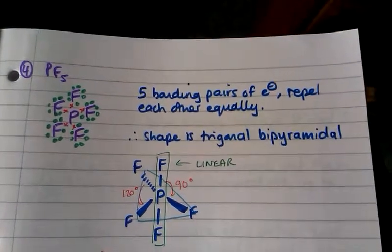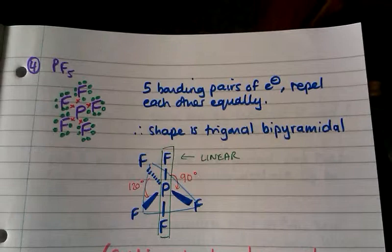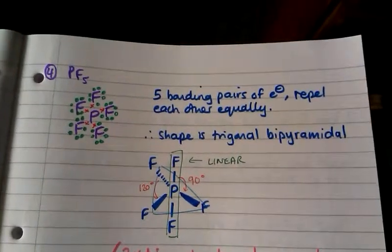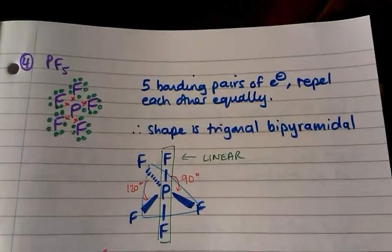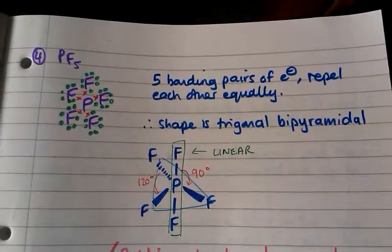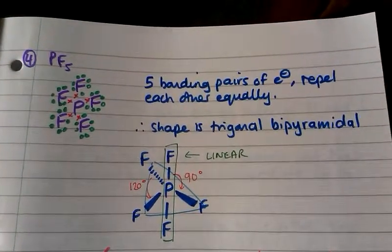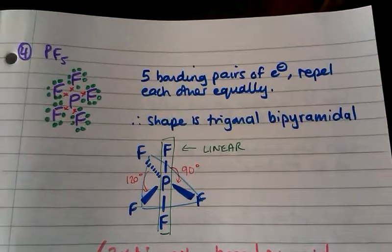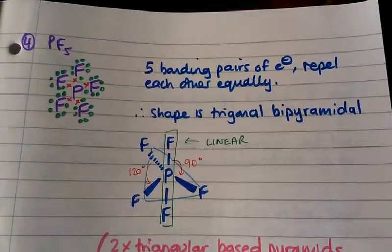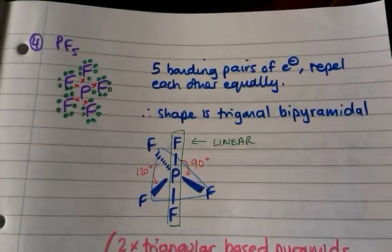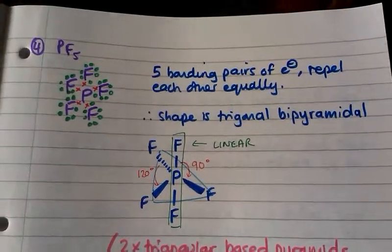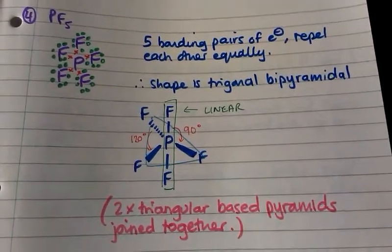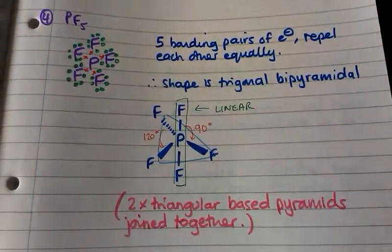Next example: PF₅. There are five bonding pairs of electrons that are all repelling each other equally, so the shape of this molecule is trigonal bipyramidal. The F–P–F bond in the middle is aligned so that it's linear, and then there are three other fluorine atoms around the centre arranged in a triangular shape. There are two different bond angles: 90 degrees and 120 degrees between the fluorines in the triangular arrangement. Think of two triangular-based pyramids joined together at the base.